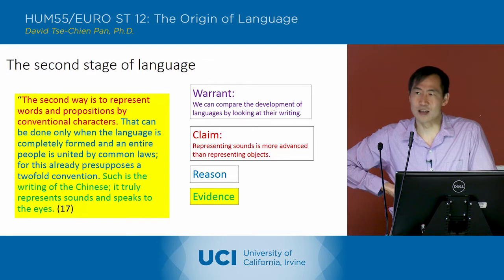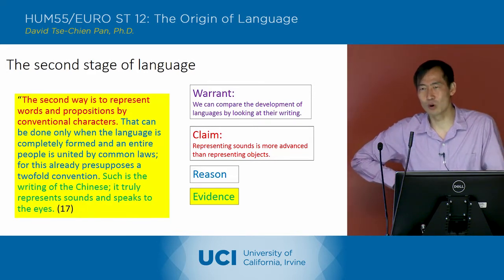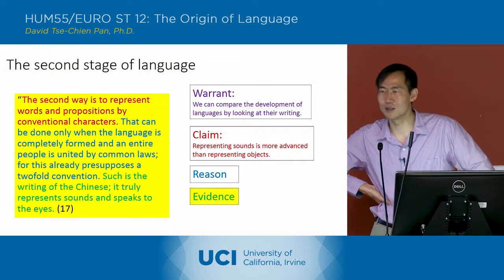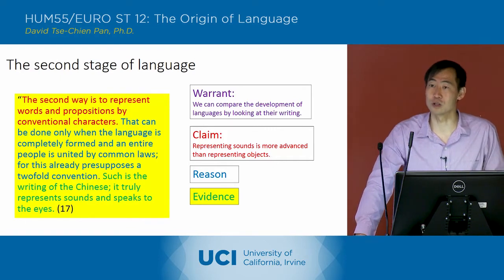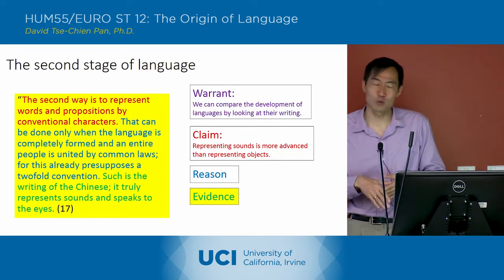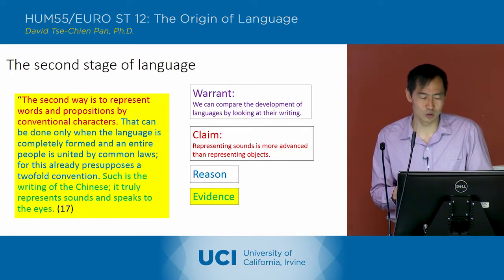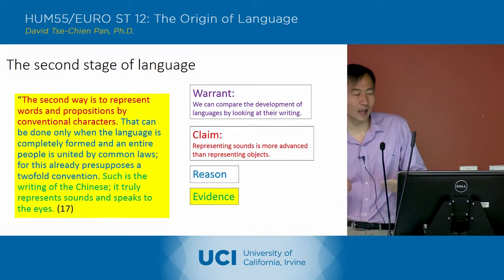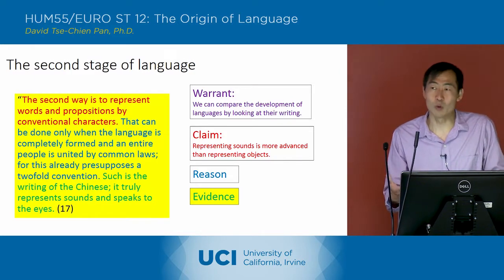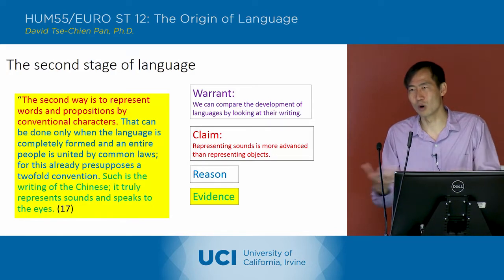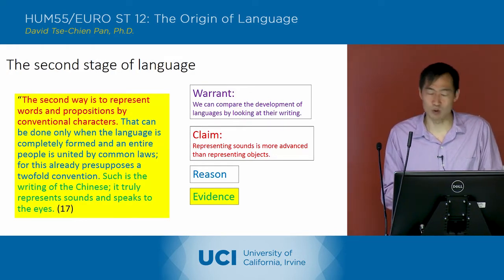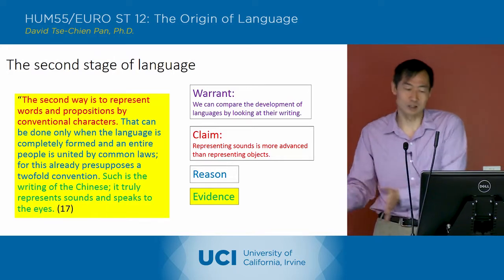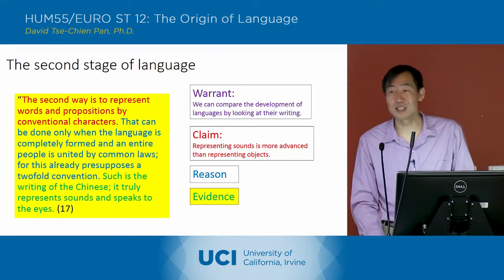The reasoning for why this indicates a more advanced form is that 'this can only be done when the language is completely formed and an entire people is united by common laws, for this already presupposes a twofold convention.' He's saying that in order for the signs of a language to refer to sounds, there need to be conventions — agreements about what different things mean — and that is also what you need to have laws and more complex forms of society. So he sees development moving in language and society at the same time. That's his second stage of language.